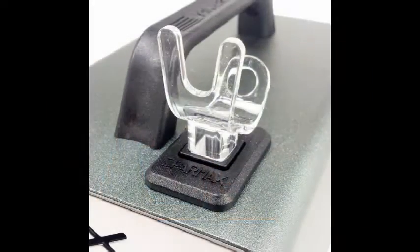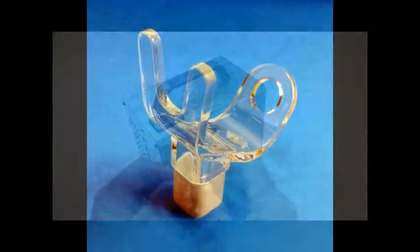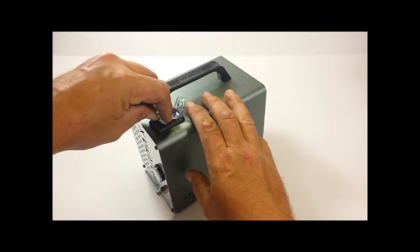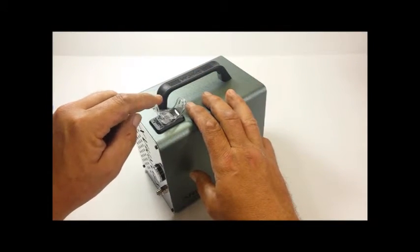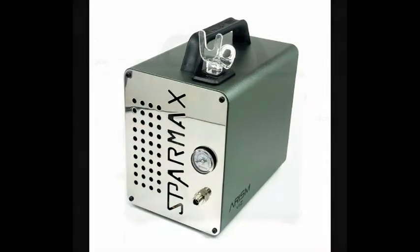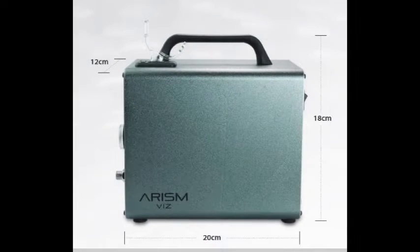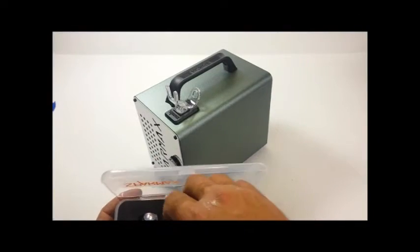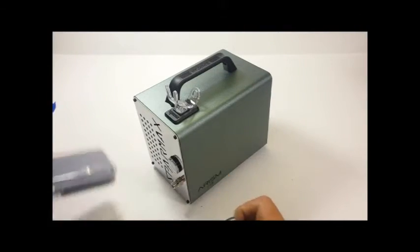SparMax mentions that the Arism Viz incorporates two new innovative designs, the SmartStop and the Silver Bullet Plus. So with that, if we move up to the top of the unit, there is a black plate with a square insert on top. This is SparMax's SmartStop power saving function. Provided in the box is a clear acrylic airbrush holder, which slides snugly into the square opening of the SmartStop switch.